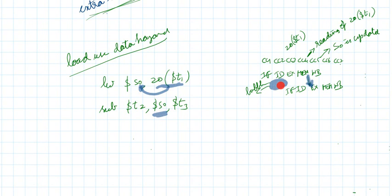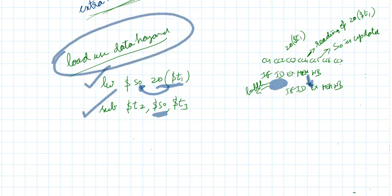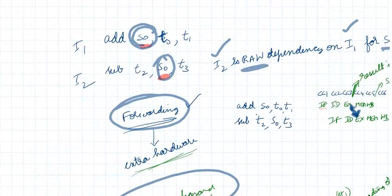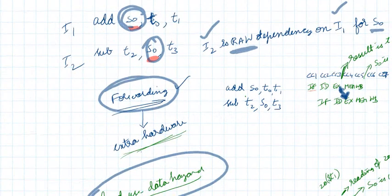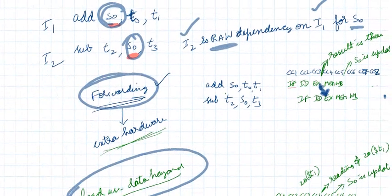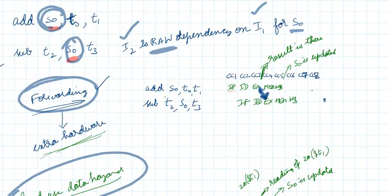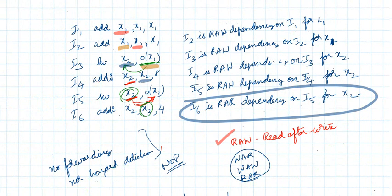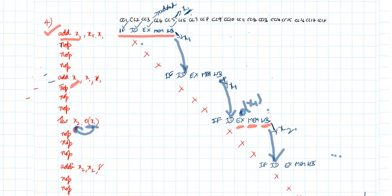This is a special case: if a load instruction is followed by an instruction that uses the loaded value, even with forwarding you must insert one bubble. If there is no load instruction and both are R-type or ALU instructions, forwarding means no waiting at all. In the original question, since we have no forwarding and no hazard detection, we need to insert three NOPs and wait three clock cycles.